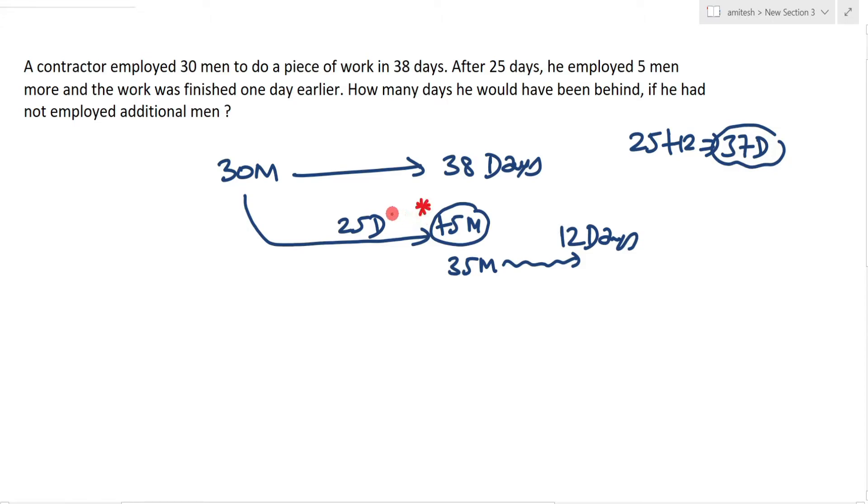Now the question is asking, if the contractor had not employed five more men, then how many days after the scheduled time would the work be finished? In both cases, the work will be the same—whether you are employing five more men or not, the work for 25 days remains the same.